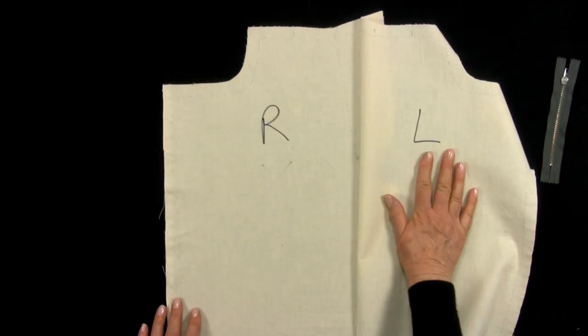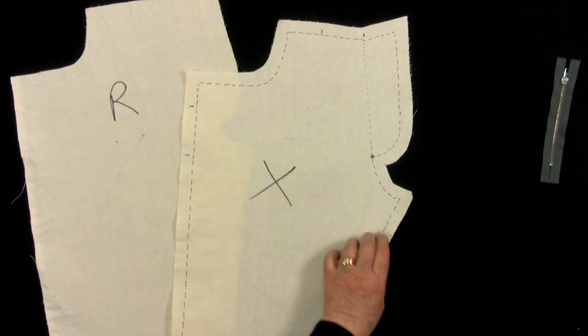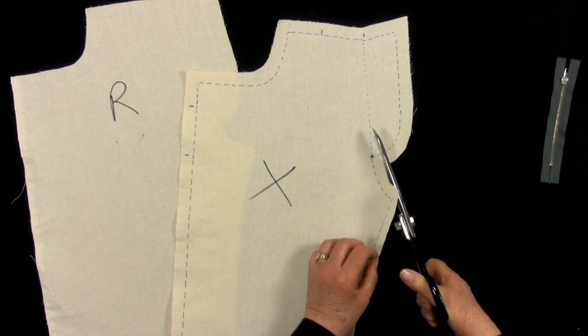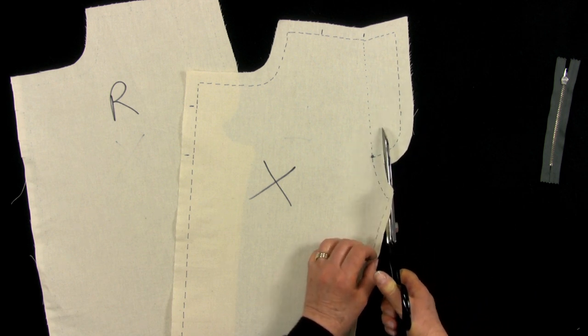Starting with the left front, cut off the fly extension, leaving a seam allowance.